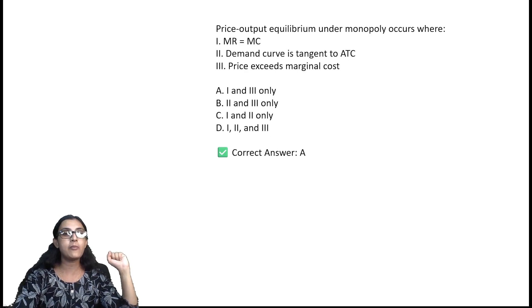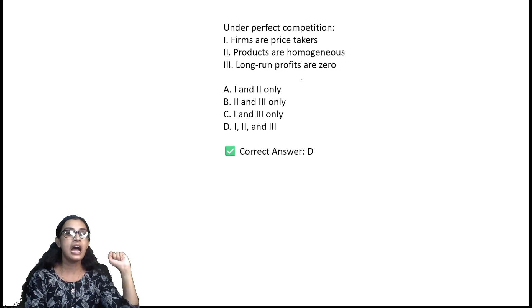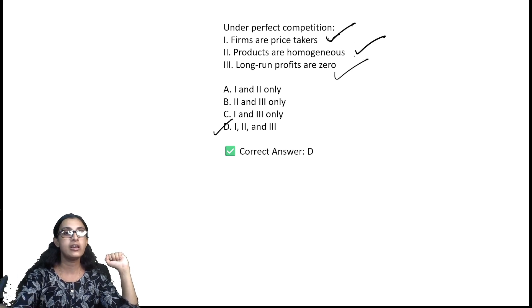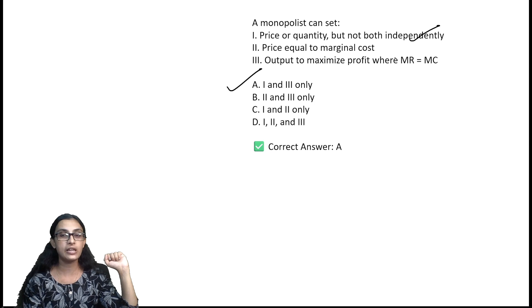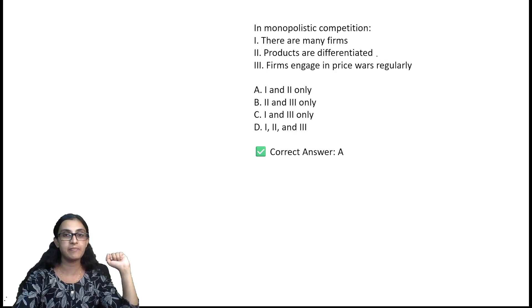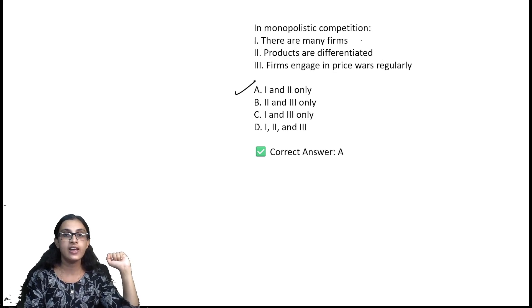Price-output equilibrium under monopoly occurs where MR equals MC and price exceeds MC — option A. Under perfect competition, firms are price takers, products are homogeneous, and long-run profits are zero — option D. A monopolist can set price or quantity, but not both independently, and produces where MR equals MC to maximise profit — option A. Under monopolistic competition, there are many firms and products are differentiated — option A.